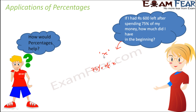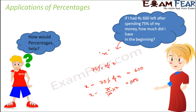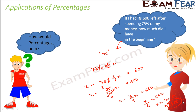The initial money is X. From it, you have spent 75% of X. So the remaining money is X minus 75/100 × X, which equals 600. This simplifies to X minus 3/4 X equals 600, so X/4 equals 600, therefore X equals 4 × 600, which equals 2400. She initially had Rs 2400.